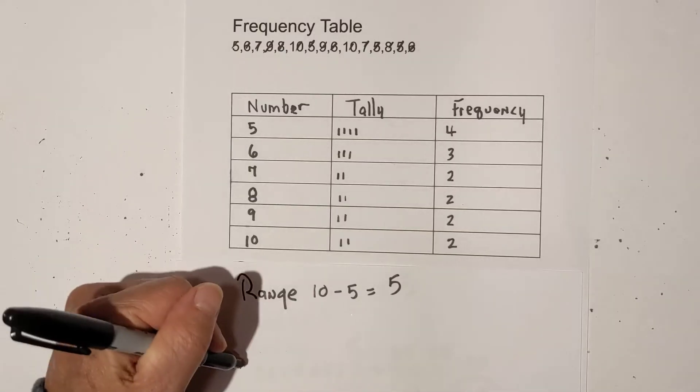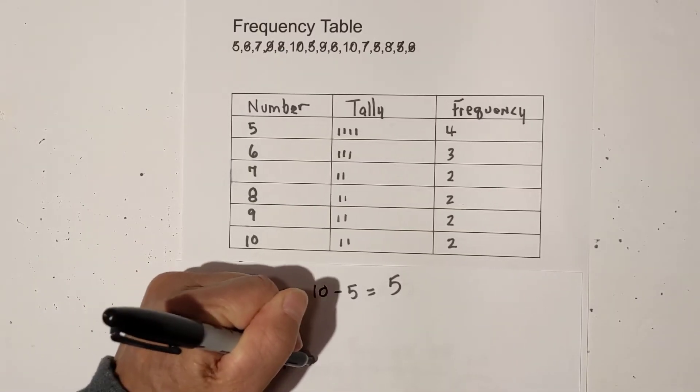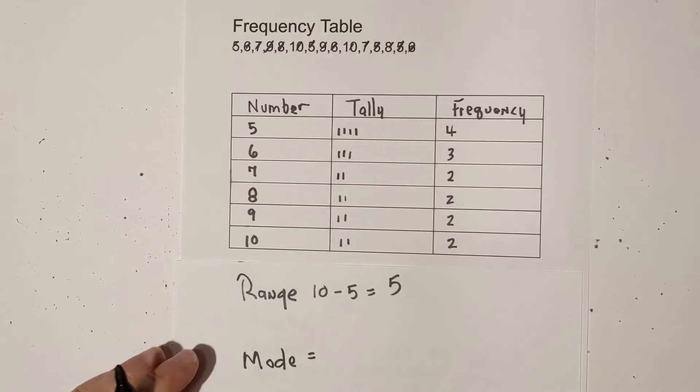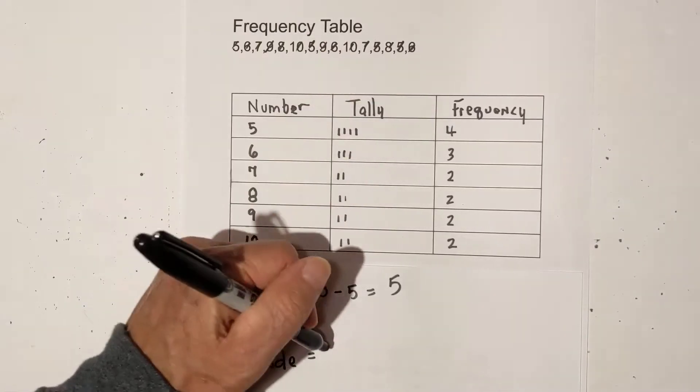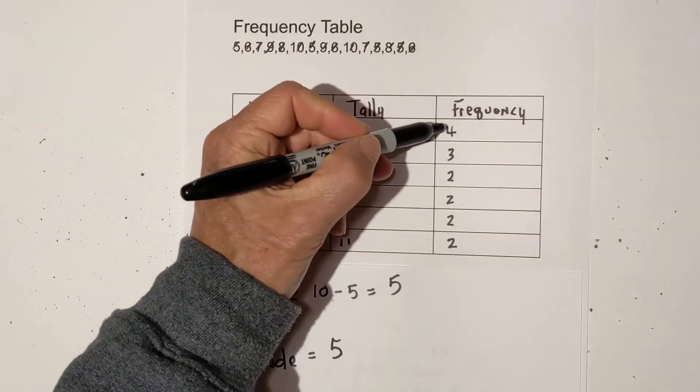Next, the mode is just the number that appears most often in the data set. And so you just look at the frequency and 5 appears most often. 4 is the greatest.